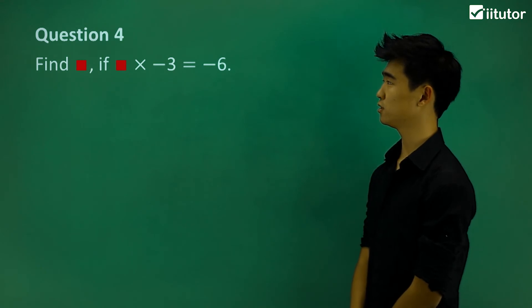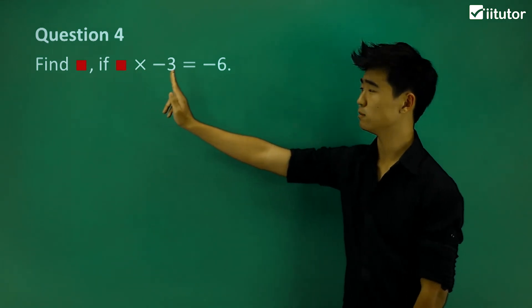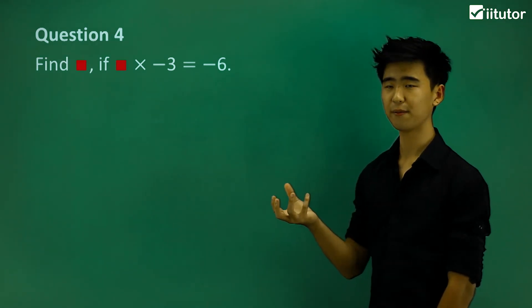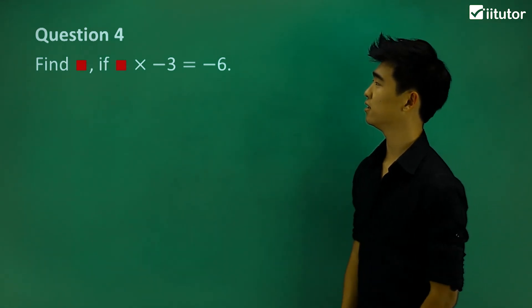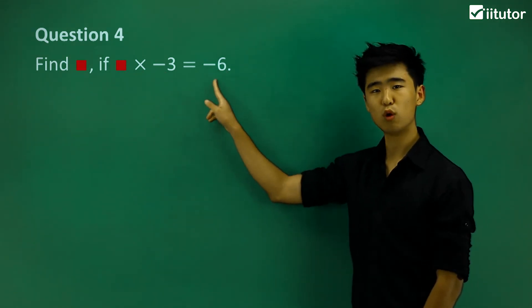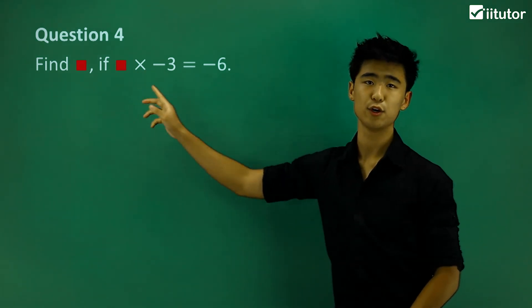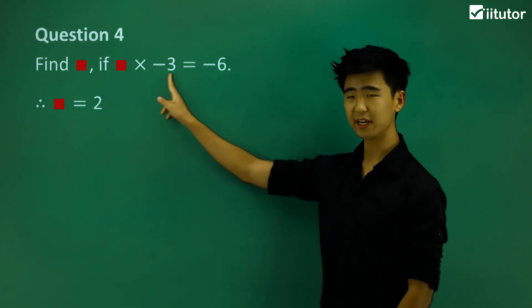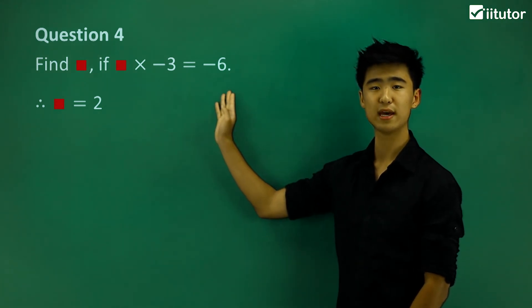Let's move on to question number four: find the box if the box times negative three gives negative six. We know the number is two, since two times three is six. What sign times a negative gives a negative? The two signs have to be opposite, so the answer is positive two — positive two times negative three gives negative six.